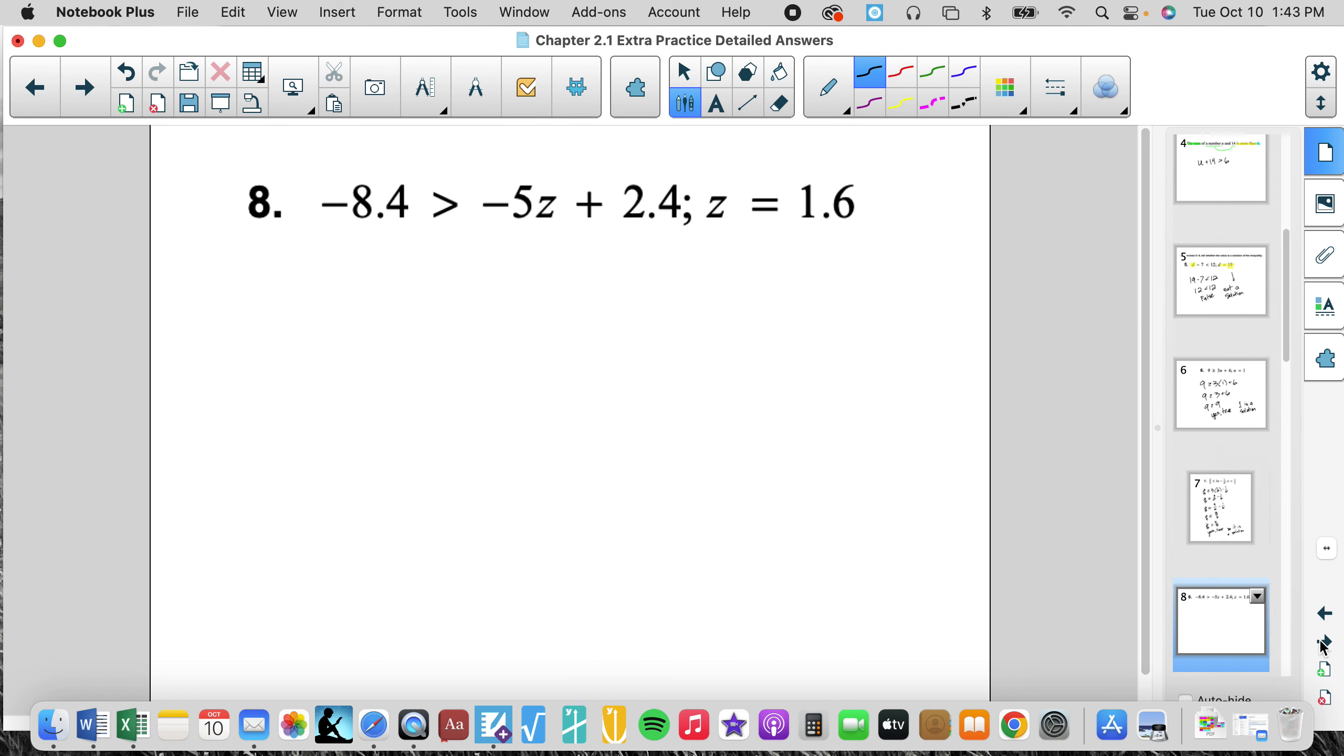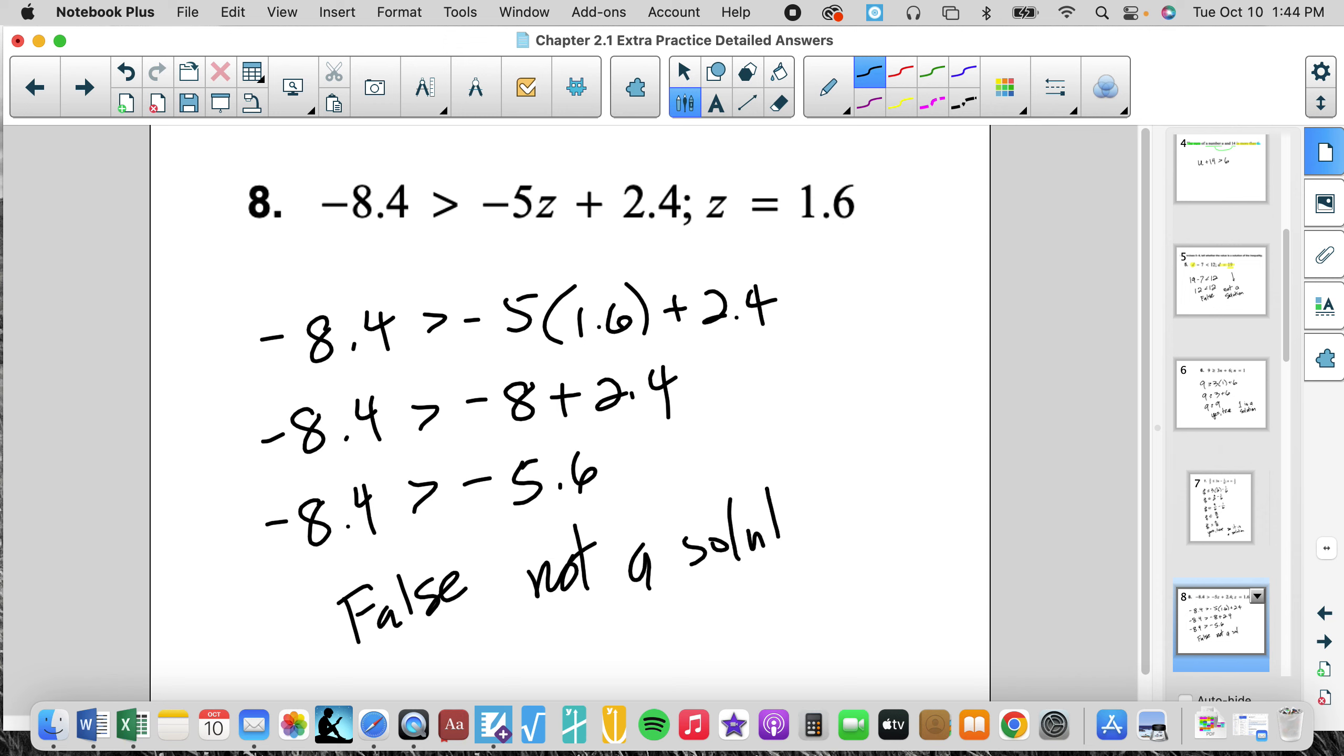This time we're plugging in 1.6. Negative 8.4 is greater than negative 5 times 1.6 plus 2.4. We're going to multiply negative 5 times 1.6, which is negative 8 plus 2.4. Negative 8.4 is greater than negative 8 plus 2.4, which is negative 5.6. And is negative 8.4 greater than negative 5.6? That is false, not a solution. So 1.6 would not be a solution to that inequality.